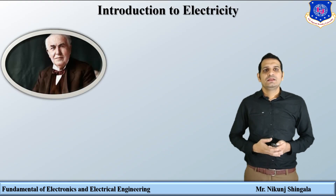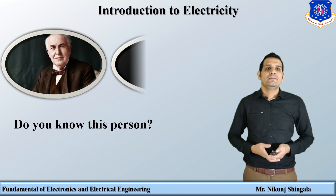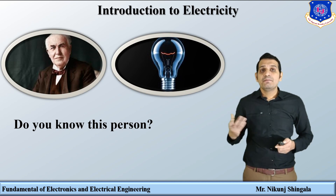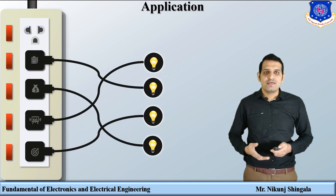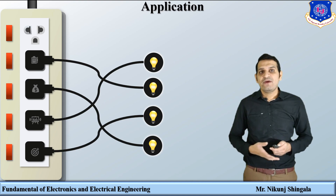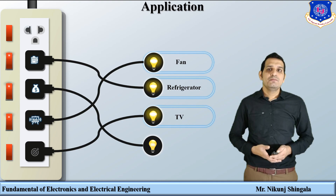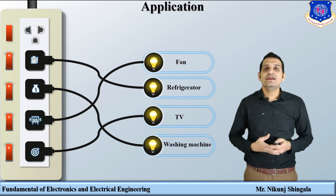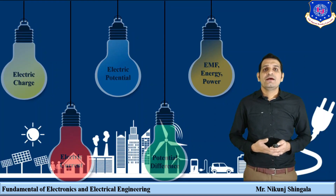Do you recognize this person? Thomas Edison, who invented the electric bulb, which is used for lighting purposes. But the bulb works on what? It works on electricity. Not only this device, but there are a number of devices like fan, refrigerator, TV, and washing machine, which all work on electricity and which you are using in day-to-day life. So the question is: why is electric energy so widely used?